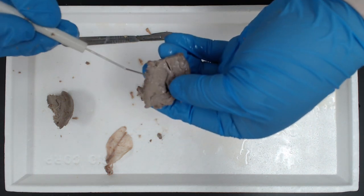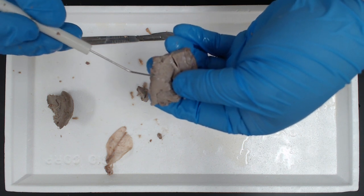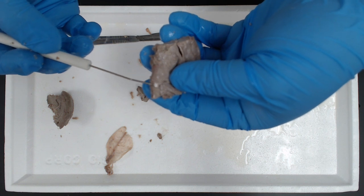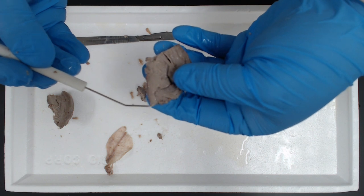And then, of course, diencephalon leads into the brain stem here, which will be made up of midbrain, this bulbous region right there, which is the pons, and then the medulla oblongata off the back.